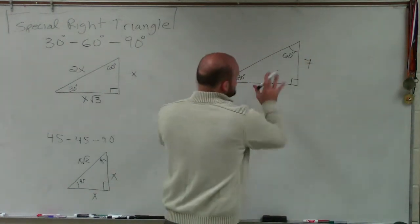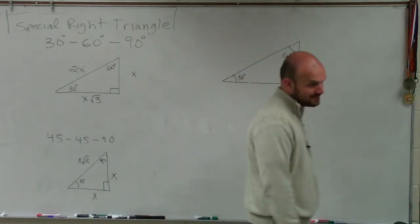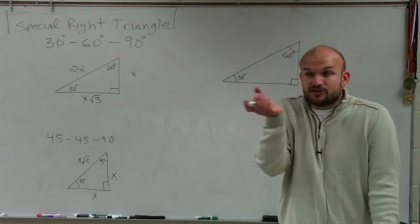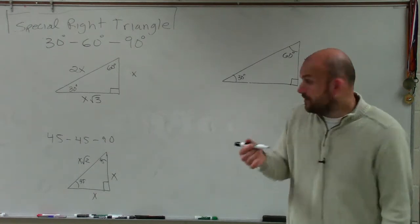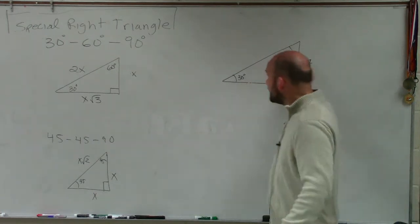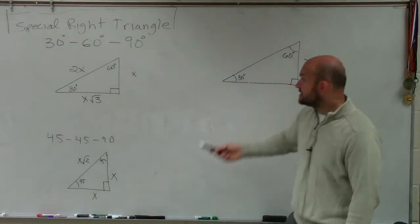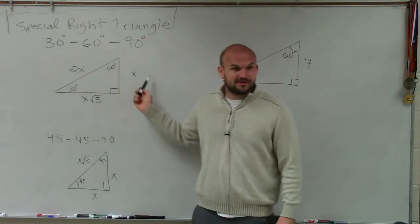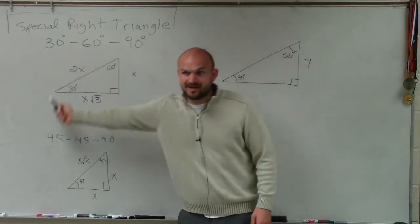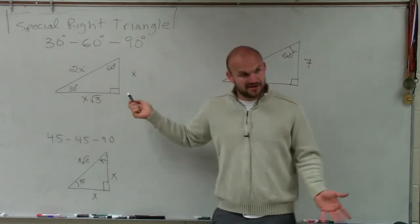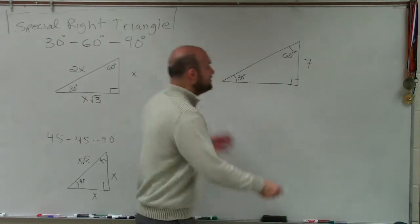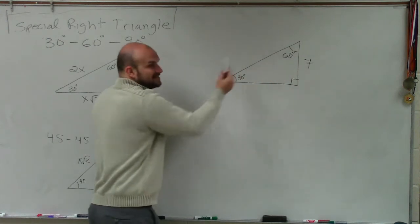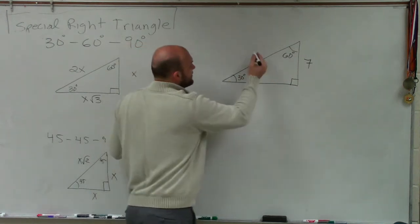So ladies and gentlemen, let's look at the special right triangles. One thing we know is if we have the short leg — these are your two legs — if we have the short leg, to find the hypotenuse, all we have to do is multiply by 2. So if that's 7, then this has to be 14.